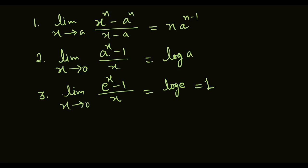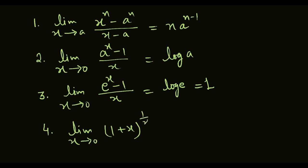Since log e equals 1, it means limit x approaches to 0, e raised to power x minus 1, upon x, is equal to 1. Fourth formula is: limit x approaches to 0, 1 plus x, raised to power 1 upon x, is equal to e.